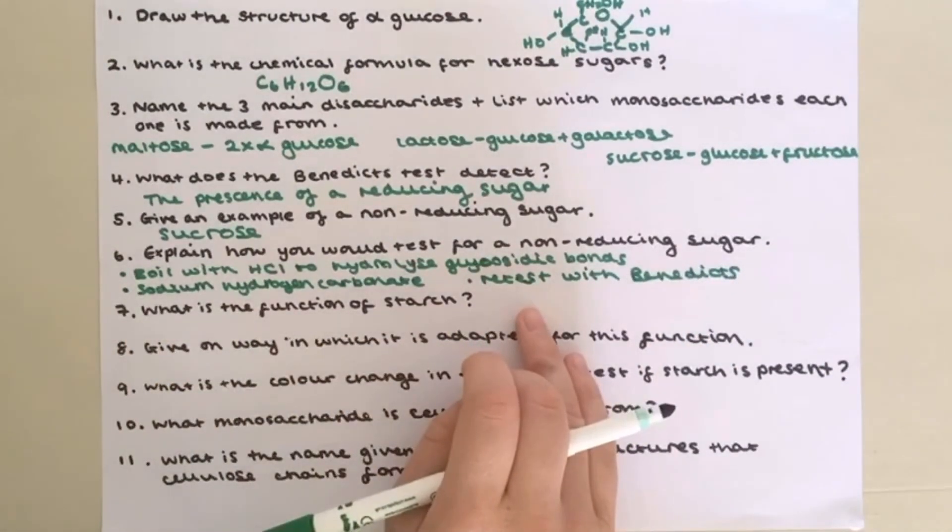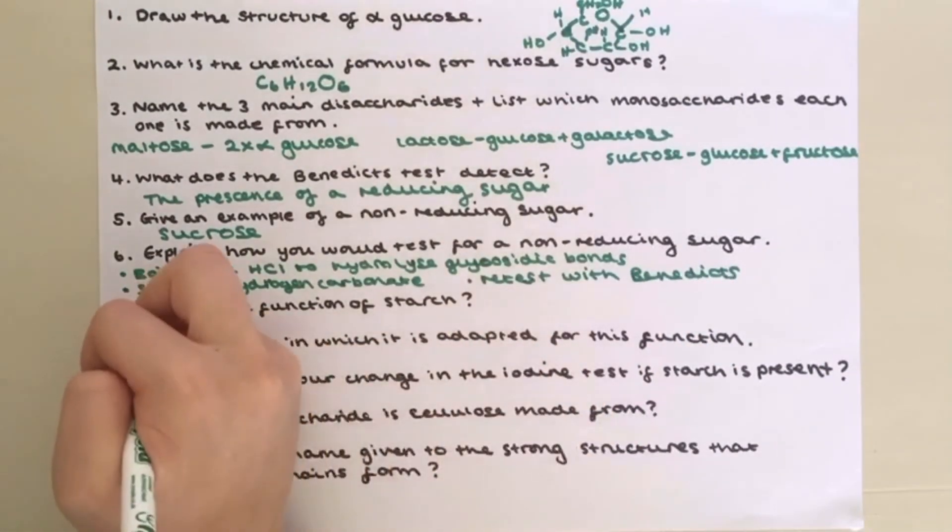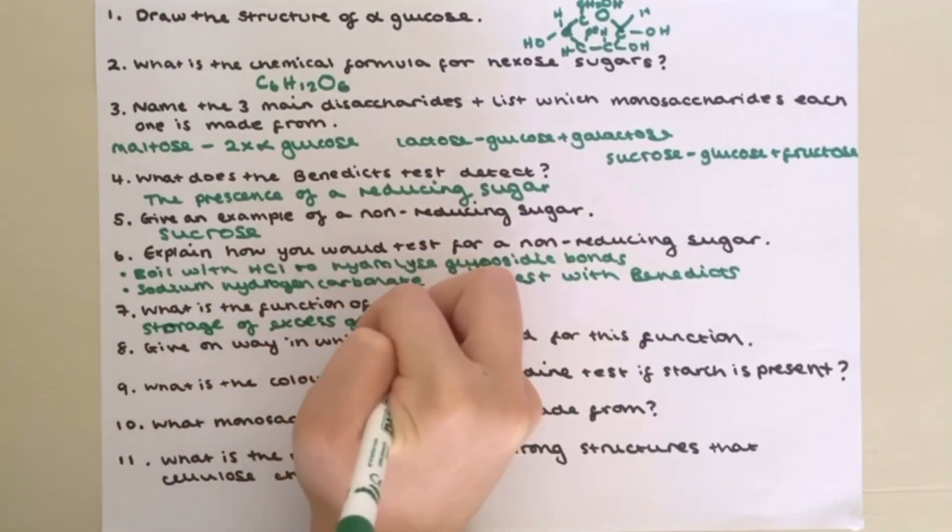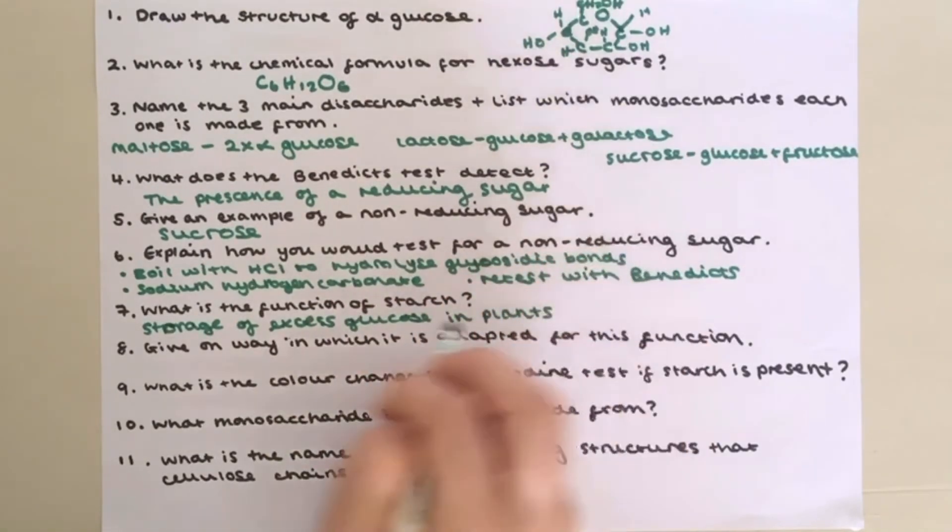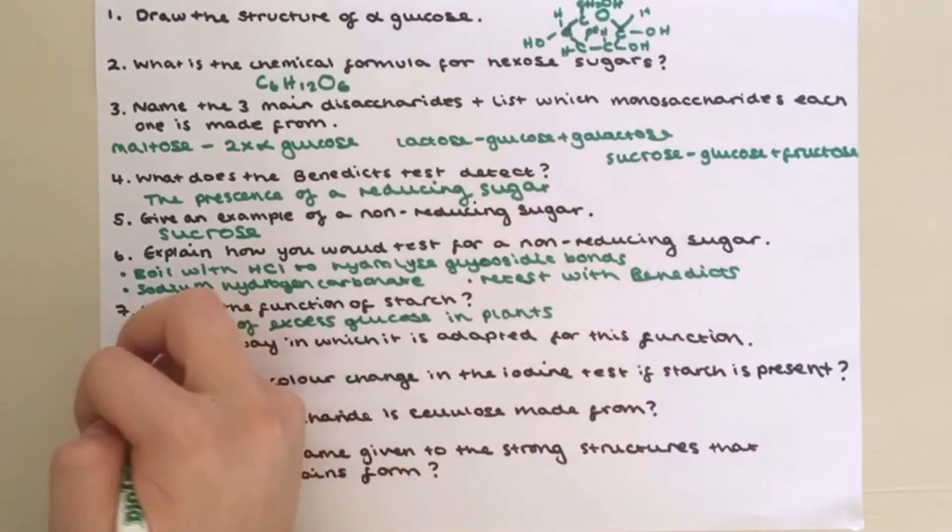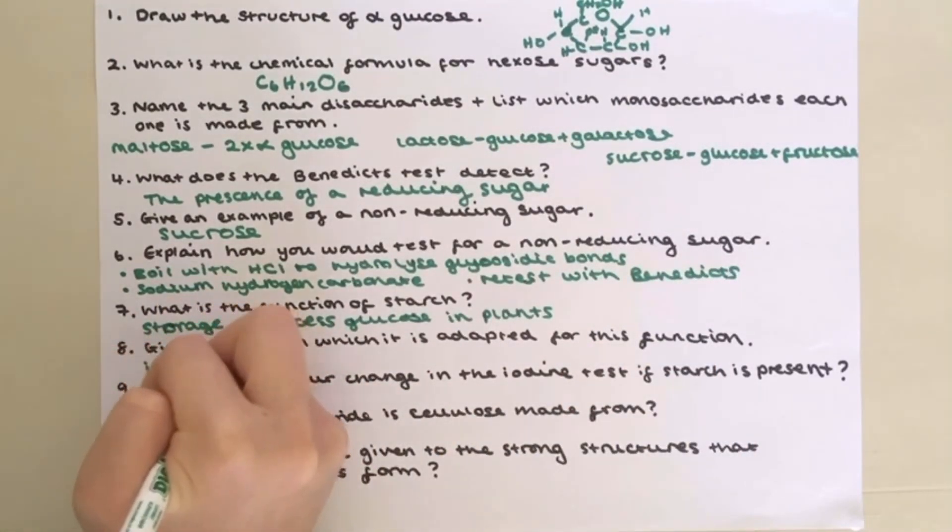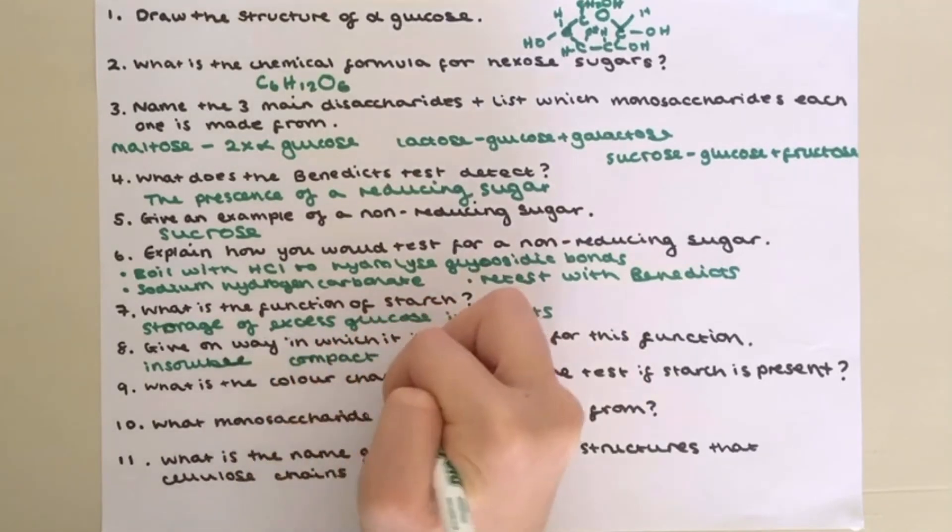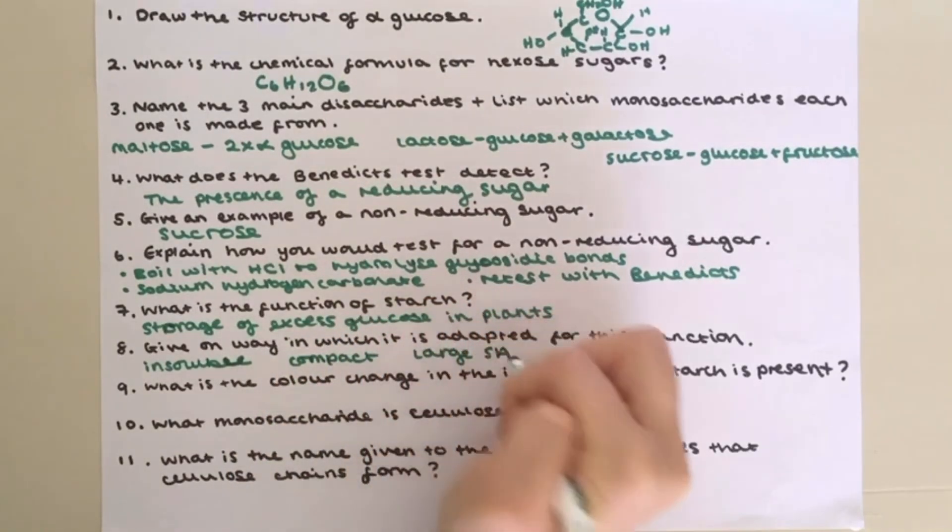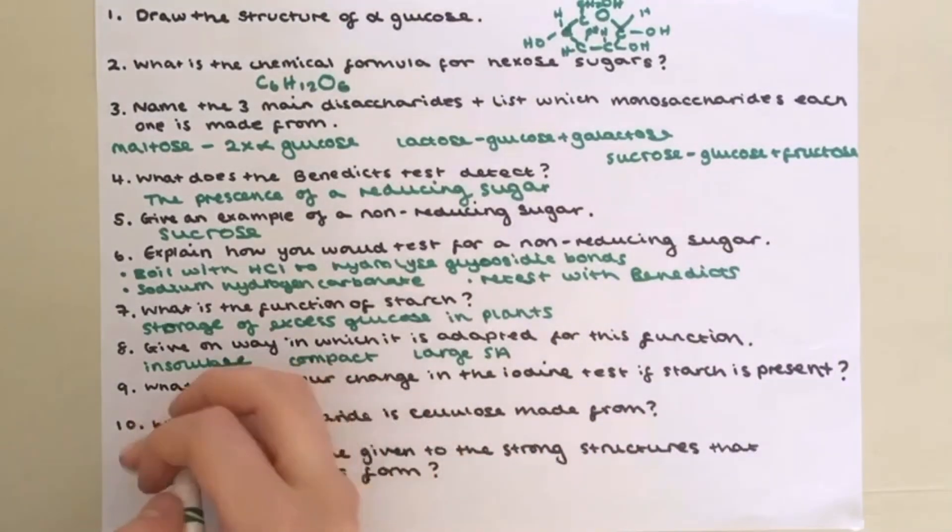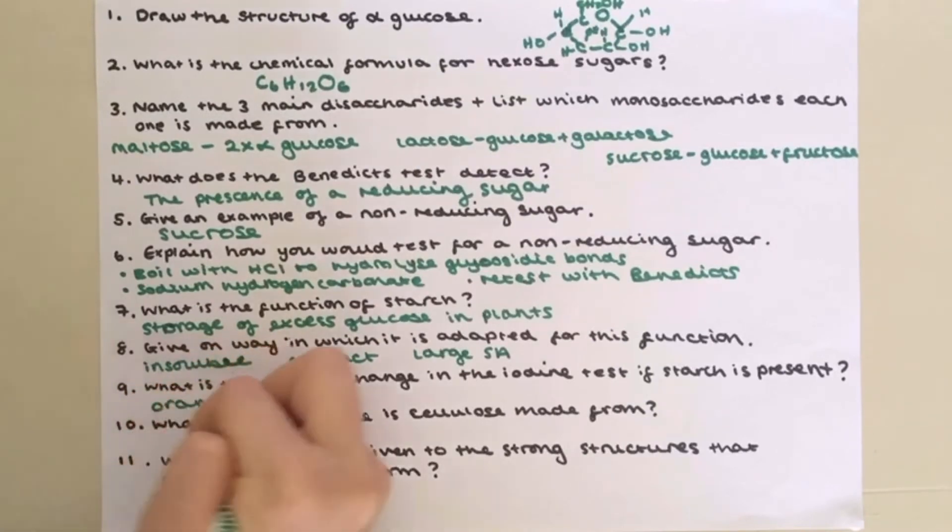Question 7, what is the function of starch? Starch is used for storage of excess glucose in plants. Give one way in which it is adapted for this function. So you could have had that it is insoluble, it has a compact shape or a large surface area. What is the colour change in the iodine test if starch is present? It will go from orange to blue black.